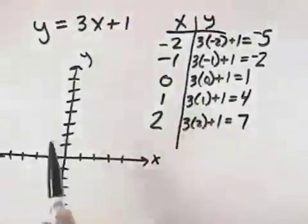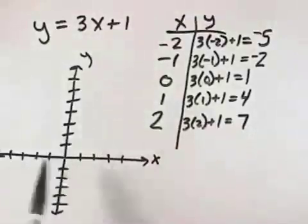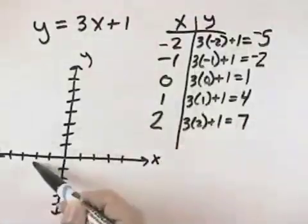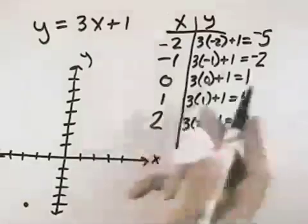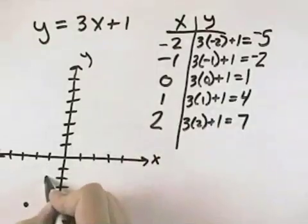So when x equals negative 2, counting 2 to the left, y equals negative 5, so we count 5 down to get the point negative 2, negative 5. When x is negative 1, y is negative 2.